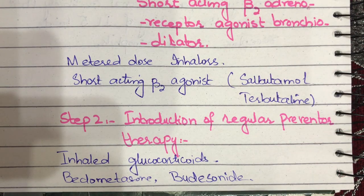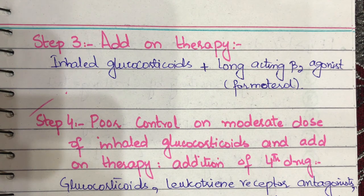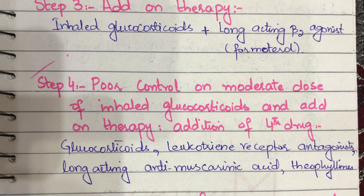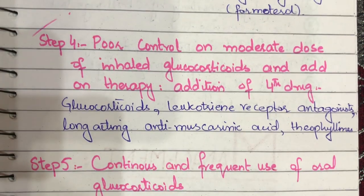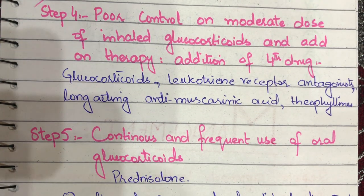If Step 1 does not show improvement, we move to Step 2: introduction of regular preventive therapy using inhaled glucocorticoids such as beclomethasone and budesonide. If the patient is non-responsive to Step 2, we move to Step 3: add-on therapy — along with inhaled glucocorticoids we add a long-acting beta-2 adrenoceptor agonist, most importantly formoterol. Step 4 addresses poor control on moderate-dose inhaled glucocorticoids: we add a fourth drug — leukotriene receptor antagonist, long-acting anti-muscarinic agents, and theophylline. Step 5 for severe asthma: continuous and frequent use of oral glucocorticoids, preferably prednisolone.